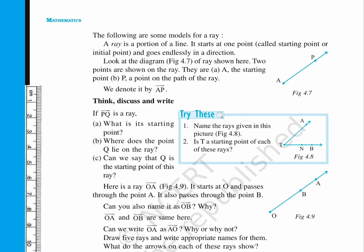There are two points on the ray. They are A, the starting point, and P, a point on the path of the ray. We denote it by AP with an overhead ray, that is, a line with a single arrow.